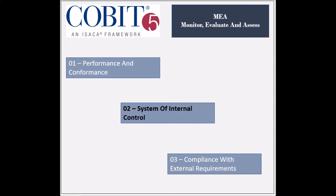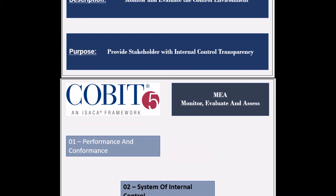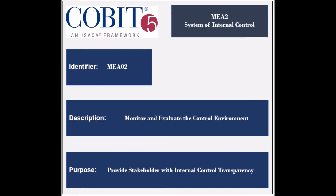The last domain of the COBIT processes is called Monitor, Evaluate and Assess. The second process is to monitor, evaluate and assess the system of internal control. The identifier of the process is MEA2. The process ensures that the control environment is constantly monitored and assessed by internal or external parties.